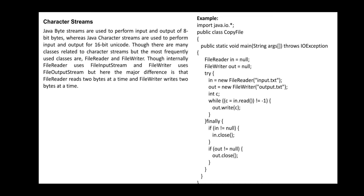FileInputStream and FileOutputStream are used for byte streams; FileReader and FileWriter are used for character streams. Internally, FileReader uses FileInputStream and FileWriter uses FileOutputStream. The major difference is that FileReader reads two bytes at a time and FileWriter writes two bytes at a time, whereas byte streams read and write only one byte at a time, because character streams use 16-bit code.